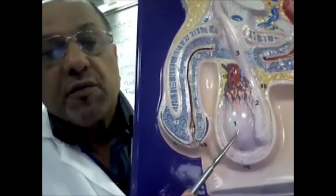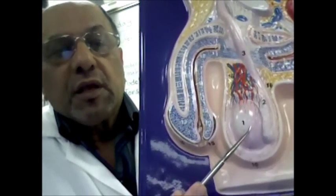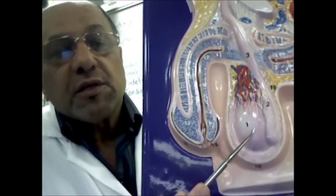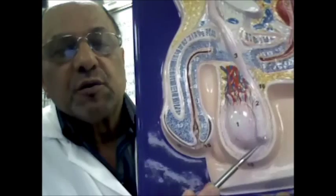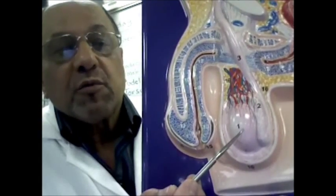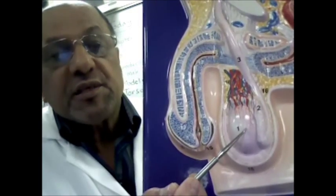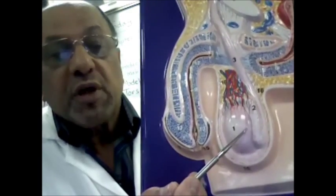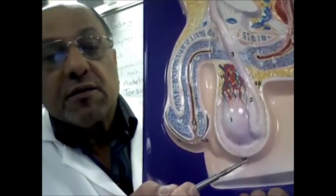This is one of the testes. The function of the testes is to produce sperm and also male hormones. One of the male hormones is testosterone. The testes is outside of the pelvic cavity and surrounded by the extension of the skin which is the scrotum.